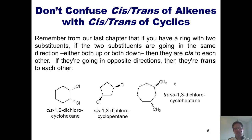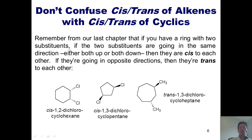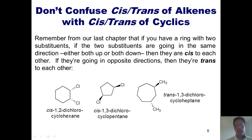You should not confuse cis-trans of alkenes with cis-trans of cyclic compounds. If we have a ring with two substituents, and the two substituents are going in the same direction — either both up or both down — then they are cis to each other. If they're going in opposite directions, then they're trans. For example: cis-1,2-dichlorocyclohexane, cis-1,3-dichlorocyclopentane, and trans-1,3-dichlorocycloheptane.